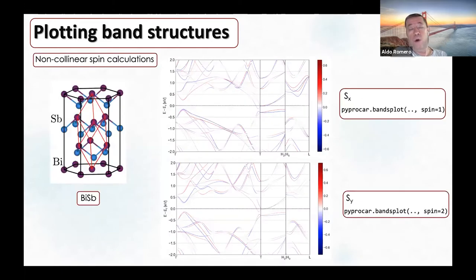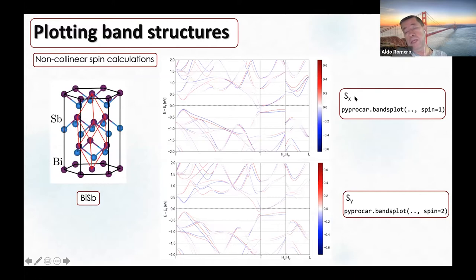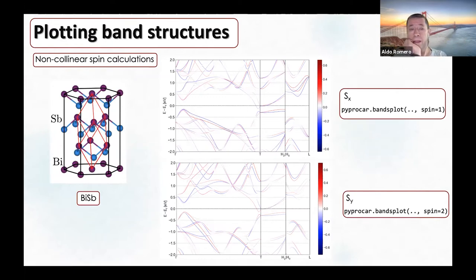In the case of non-collinear spin calculations, we can choose a specific spin projection. For example, I can plot the contribution of Sx—the spin along the x-axis—or along the y-axis or z-axis. I can plot all of them together or each independently. This is very useful for studying topological materials where you want to see spin contributions.